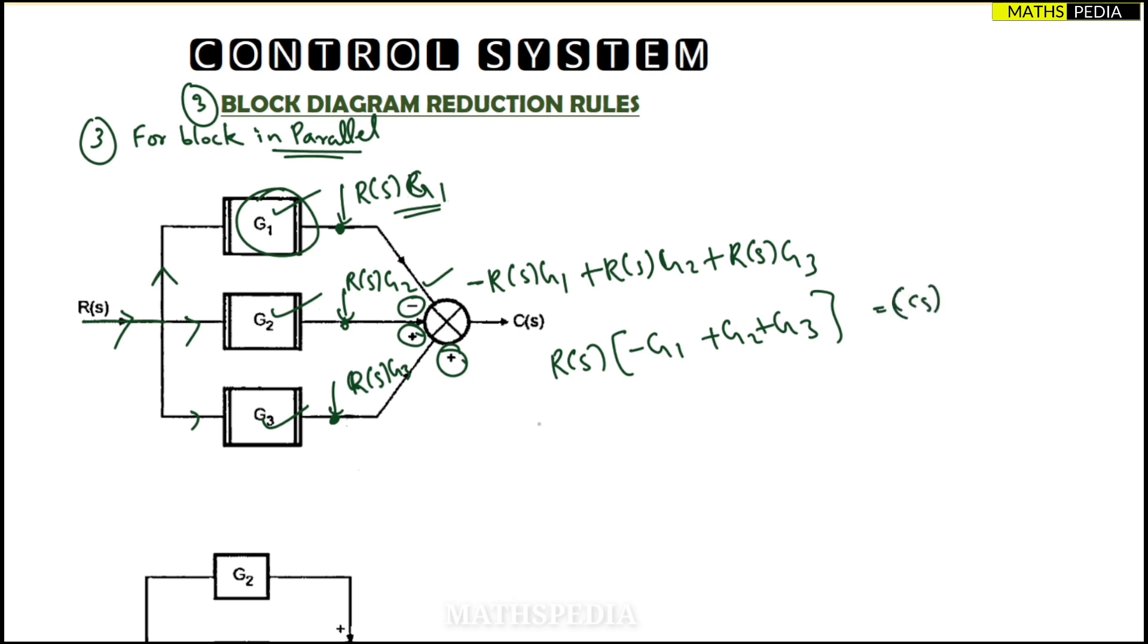So I can write C(s) by R(s), which is nothing but the transfer function of the system, closed loop transfer function, which is equal to minus G1 plus G2 plus G3.